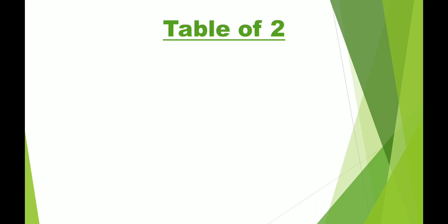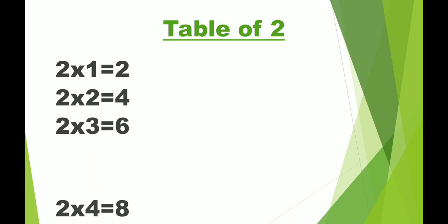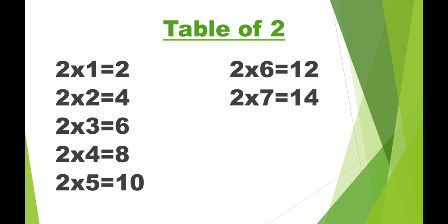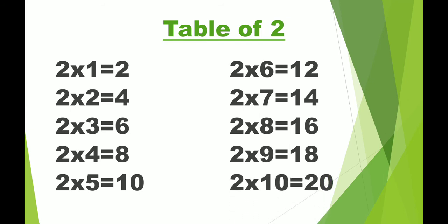Table of 2. 2 ones are 2, 2 twos are 4, 2 threes are 6, 2 fours are 8, 2 fives are 10, 2 sixes are 12, 2 sevens are 14, 2 eights are 16, 2 nines are 18, 2 tens are 20.